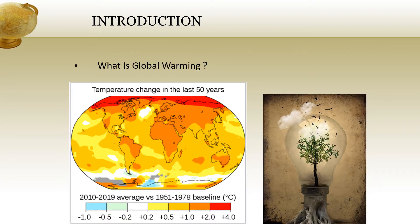Now what is global warming? Global warming is the rising average temperature of Earth's climate system, and is driving changes in rainfall patterns, extreme weather, arrival of seasons and more. Collectively, global warming and its effects are known as climate change. While there have been prehistoric periods of global warming, observed changes since the mid 20th century have been unprecedented in rate and scale.